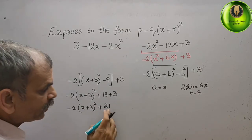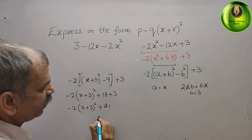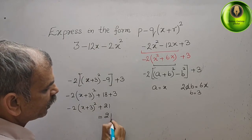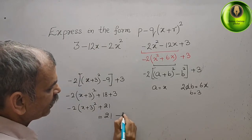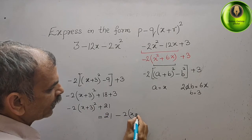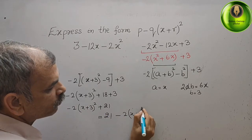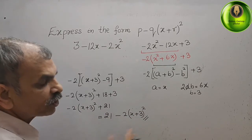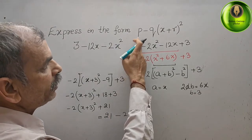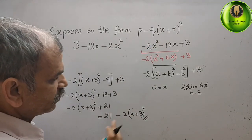Bring the 21 to the left side. The final answer is 21 minus 2(x plus 3) whole square. This is the solution, matching the required form p minus q(x + r) whole square.